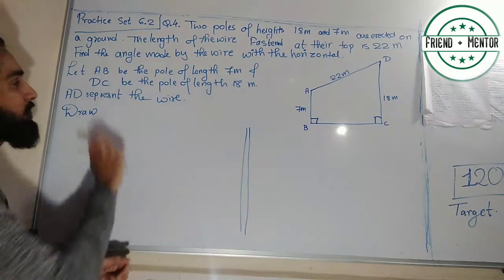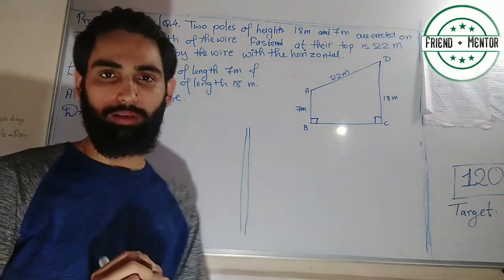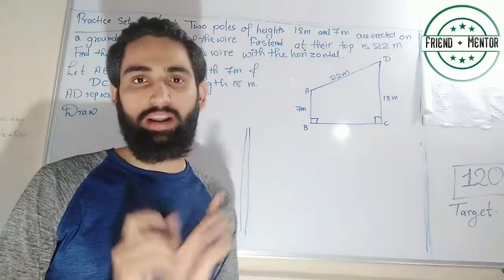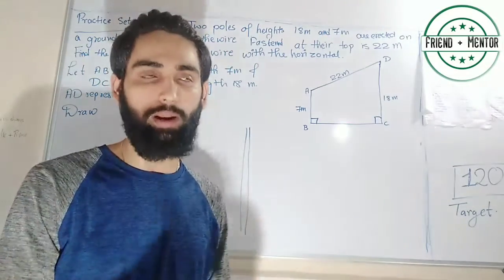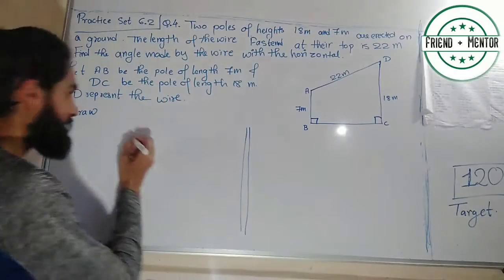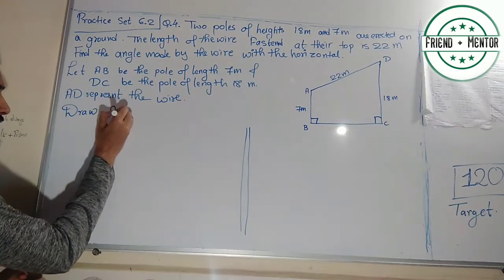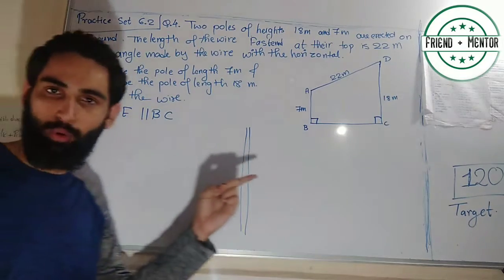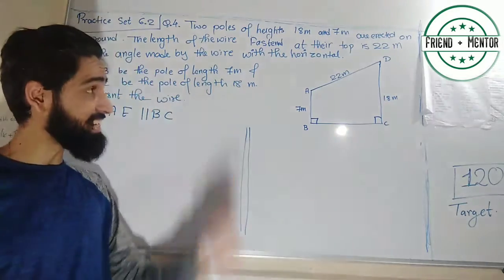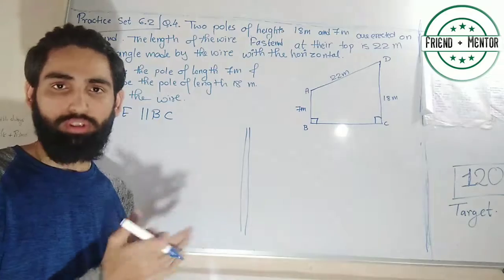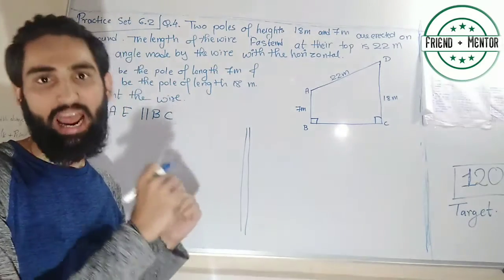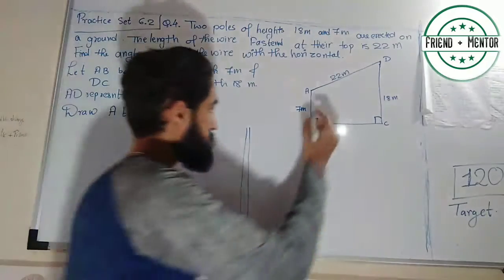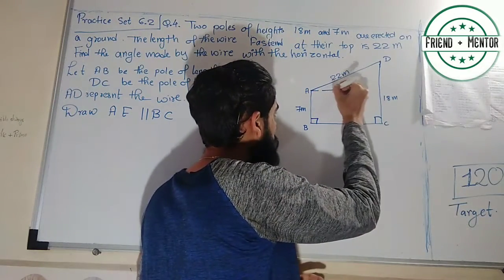Find the angle made by the wire with the horizontal. To solve this, draw A-E perpendicular to B-C, because B-C is the ground. At point A, draw a line parallel to the ground, that is B-C.